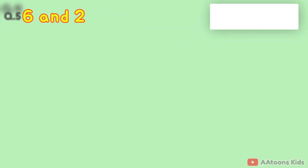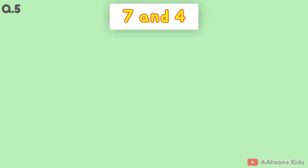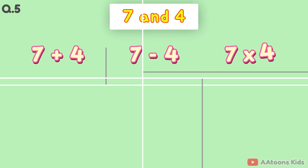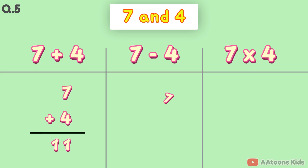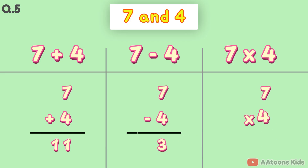The two numbers are 7 and 4. 7 plus 4 is 11. 7 minus 4 is 3. 7 times 4 is 28.